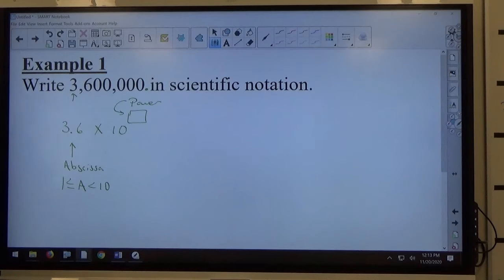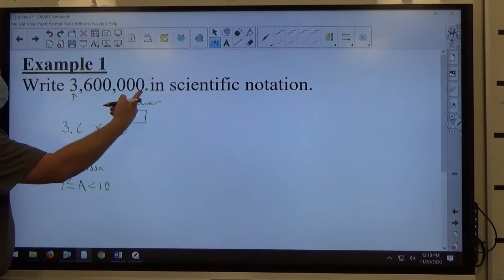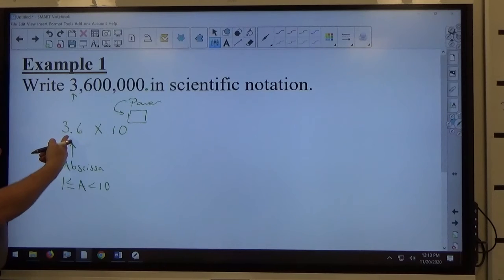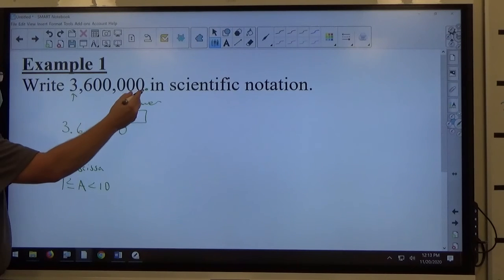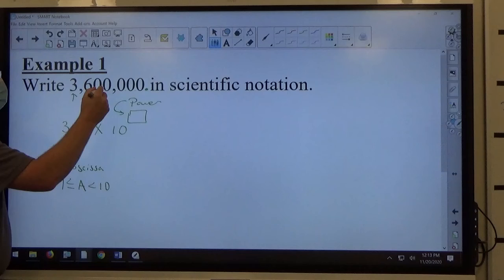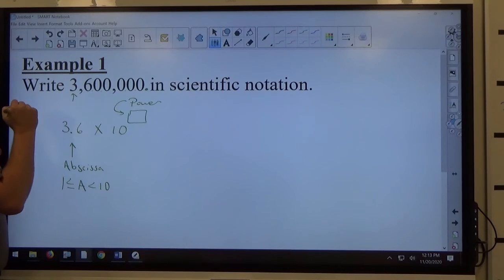So in this case, you can see the decimal point moves six spaces to go where it became 3.6, right? And I just count to find that out. It was here. One, two, three, four, five, six, that's how far it moved.